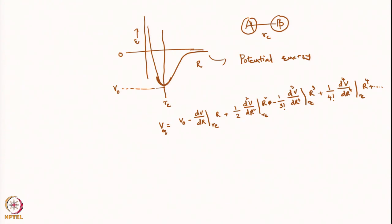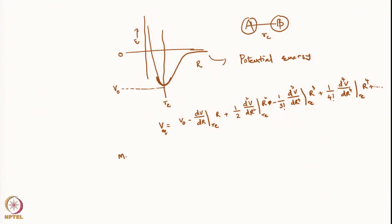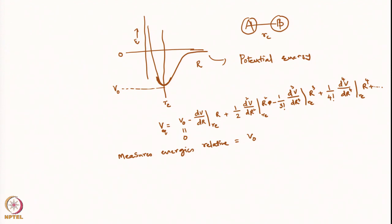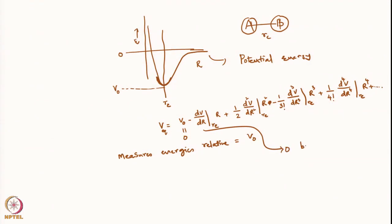One can always measure energies with respect to some reference value. If that value is V0, we measure energies relative to V0, which means we can set V0 equal to zero. Additionally, dV/dr at the bottom of the potential goes to zero, because the bottom of the potential is the same as a minimum energy — the first derivative vanishes there.